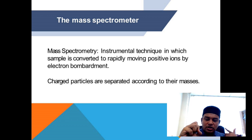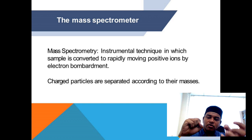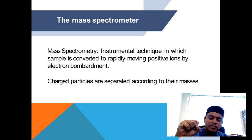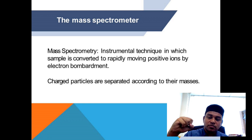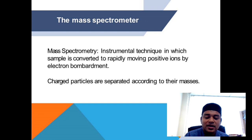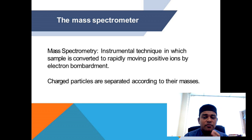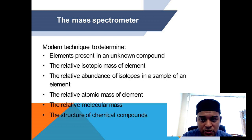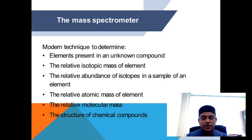So in the mass spectrometer, you do the bombardment, force the electrons away, and the atom becomes positively charged. When this atom is positively charged we call it a cation. We then force this cation to move through the mass spectrometer in order to detect its mass. That is the very basic working principle of the mass spectrometer.